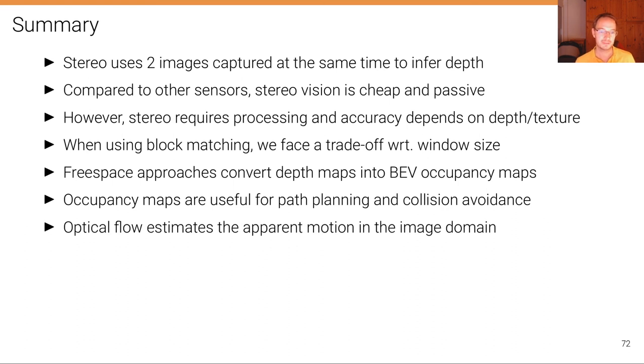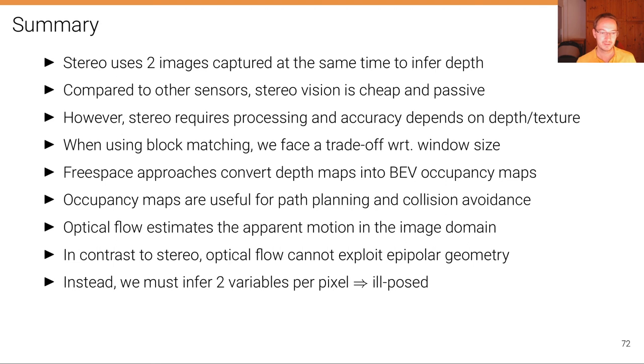Optical flow estimates the apparent motion in the image domain. And in contrast to stereo, optical flow cannot exploit epipolar geometry. Instead, we must infer two variables per pixel. So it's an ill-posed problem and we need a regularizer such as the smoothness constraints introduced by the Horn-Schunck algorithm.